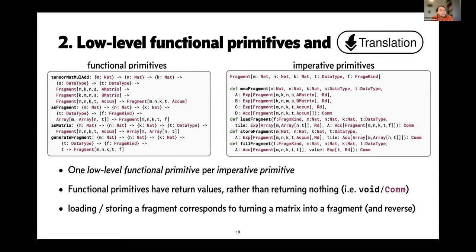You can see that we are now thinking about these functionally in the sense that we now have functions that return us a value. For example, the tensor MatMult add returns us the computed fragment back rather than returning nothing like being a void function or using one of these computation notations that is how we express void in our RISE imperative layer. The loading and storing from a fragment now corresponds directly in this functional world to turning a matrix into a fragment or turning a fragment into a matrix, so it becomes a transformation which then when we implement it turns into storing or loading a fragment to memory.